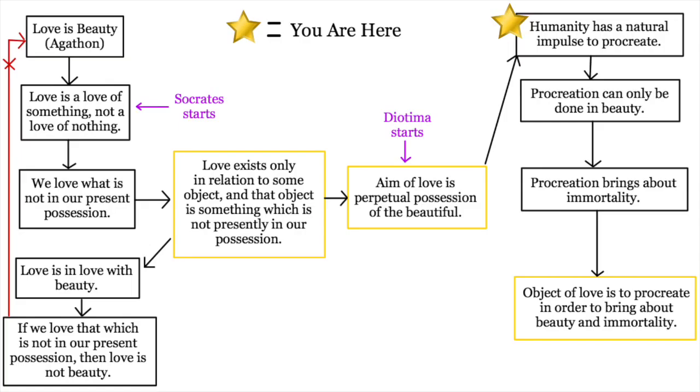Let's break it down. Diotima says all men have that procreative impulse to have kids, but this can only be done in beauty and not ugliness. Furthermore, in procreation, you bring about a mortal who is, quote, endowed with a touch of immortality. Thus, the object of love is to procreate and bring about beauty and immortality. Since the aim of love is the perpetual possession of the beautiful, it must follow that it must desire immortality along with the beautiful. Love then is the love of immortality as well as of the beautiful.